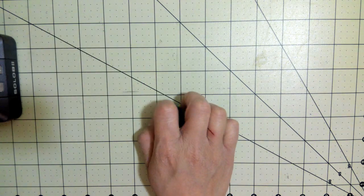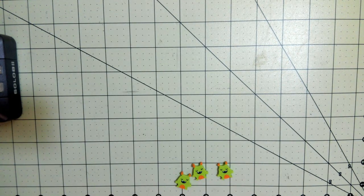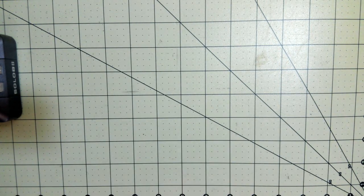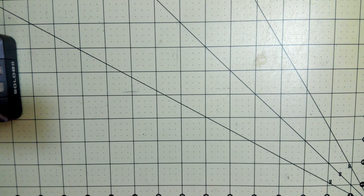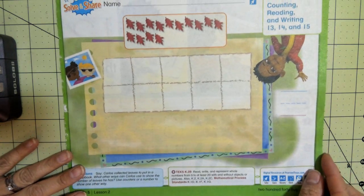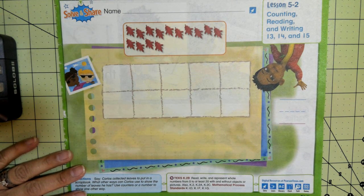So what you're going to do is you're going to pick, you can do it about three times. Pick three different cards, say the number you picked, and then represent that number with any kind of counters that you have. Okay, so let's go ahead and look at page 245. So we're going to practice counting, reading, and writing 13, 14, and 15.